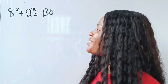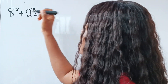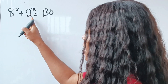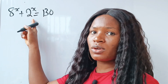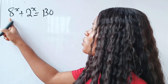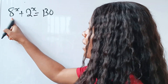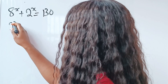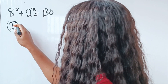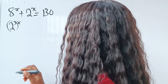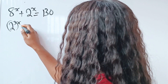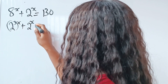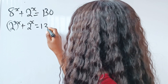The first thing we need to do is to change this to the same base. This is base 2 and we can get base 2 here. This is the same thing as 2 to the power of 3 raised to the power of x, plus 2 to the power of x, is equal to 130.